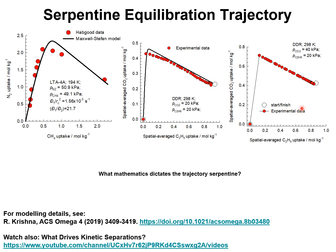The same is true for CO2-ethane uptake in DDR zeolite when the partial pressures of CO2 and ethane are 40 kilopascal and 20 kilopascal respectively. We see that the approach to equilibrium is not monotonous but proceeds in a serpentine manner. We now examine the mathematics that dictates the serpentine equilibration trajectory in composition space.